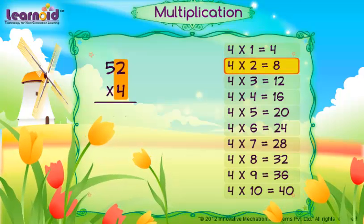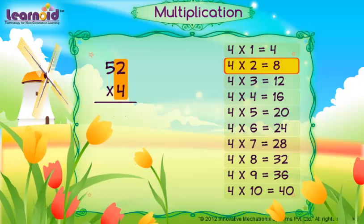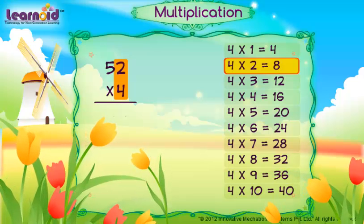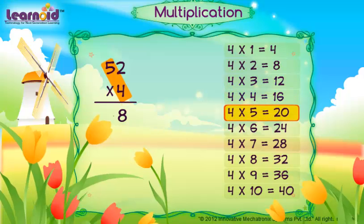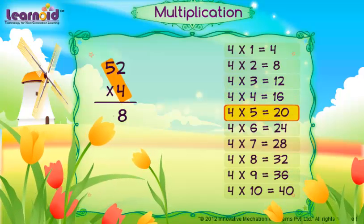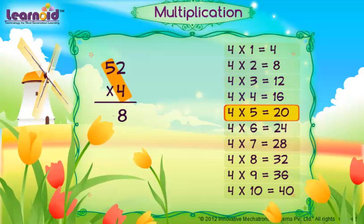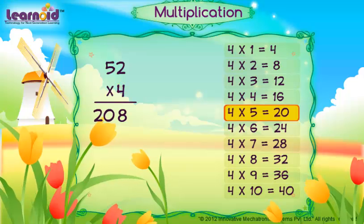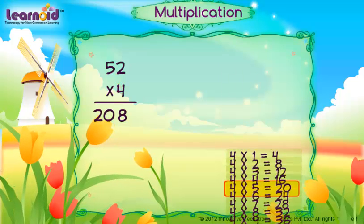First, multiply 2 with 4. 4 into 2 is 8. Write 8. 4 into 5 is 20. Write 20. Answer is 208.